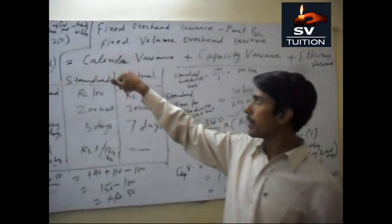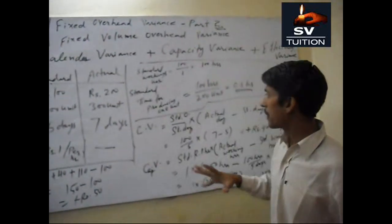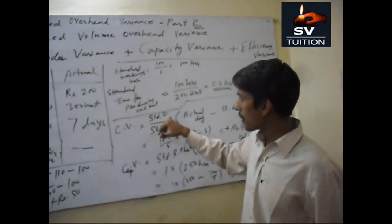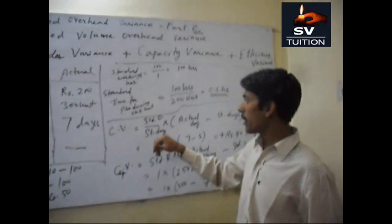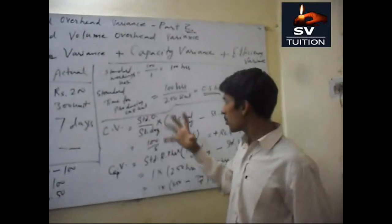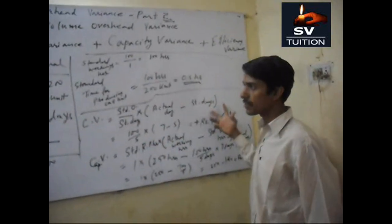First of all we will calculate calendar variance. Calendar variance is standard overhead divided by standard days into actual days minus standard days.